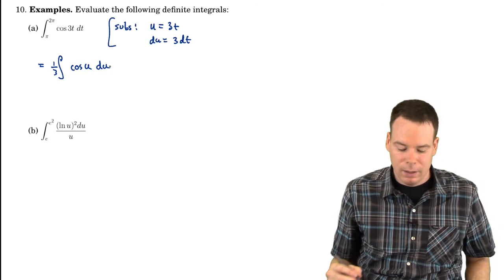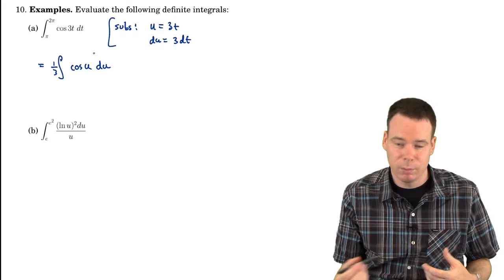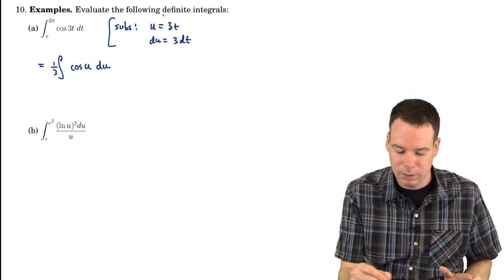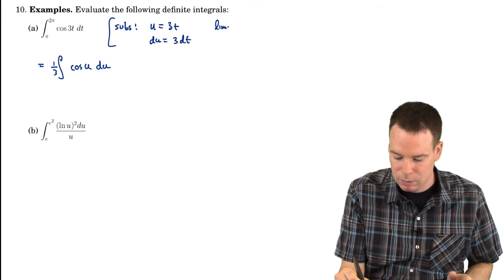And, of course, we could, as I said, continue on and say, well, now let's compute the anti-derivative, plug everything involving t back in, and then use the original limits of integration. That's fine. It just involves that extra step of having to plug everything back in terms of t. Whereas, instead, we could eliminate that extra step by just changing the limits of integration at this point in time.